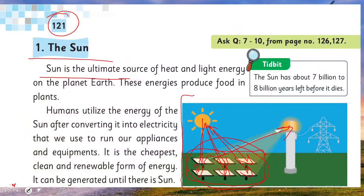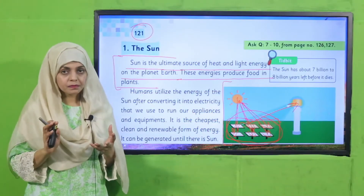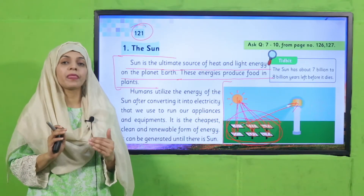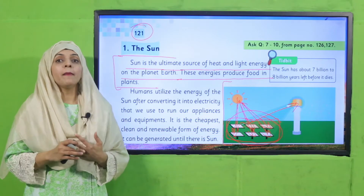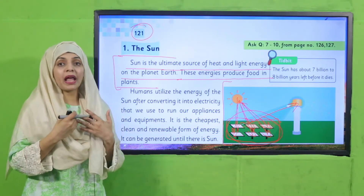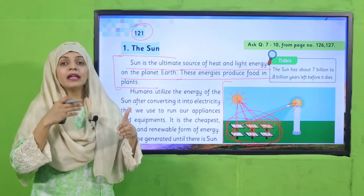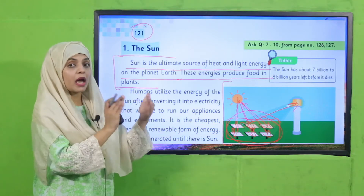The sun is the ultimate source of heat and light energy on planet Earth. These energies produce food in plants. Not just electricity — the sun provides heat and light that allows plants to make our food properly. Animals and human beings feed on those plants, and that is how the energy is converted from one form to another.